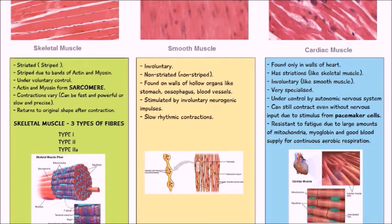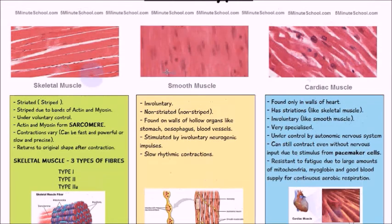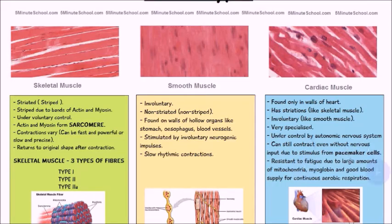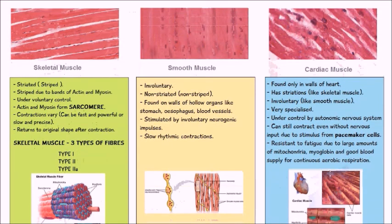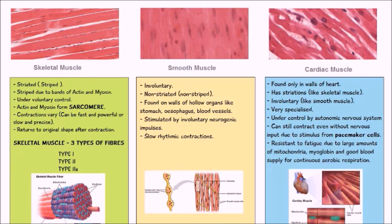The last muscle type is cardiac muscle. It's found only in the walls of the heart and it has striations just like skeletal muscle, but there are some other structural differences. It's involuntary like smooth muscle, so it's not under your conscious control, and it's very specialised. It's under control by the autonomic nervous system, but even without this it's still able to contract without any nervous input because it's stimulated by pacemaker cells — I've made a video on pacemaker cells so the link will be in the description. Cardiac muscle is also resistant to fatigue because it has large amounts of mitochondria and myoglobin, and it has a very good blood supply, which allows for continuous aerobic respiration.